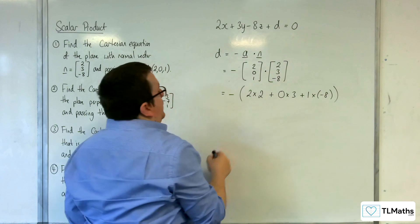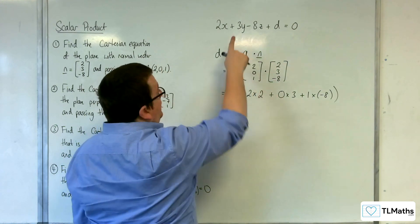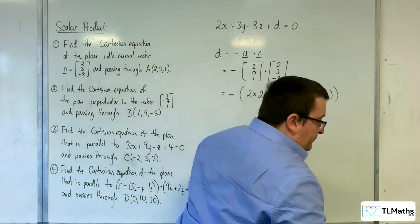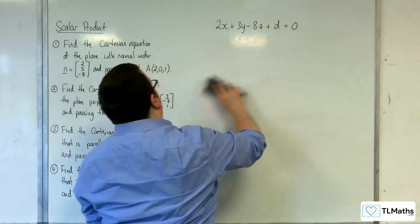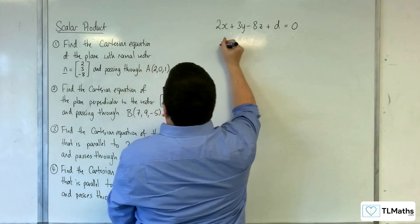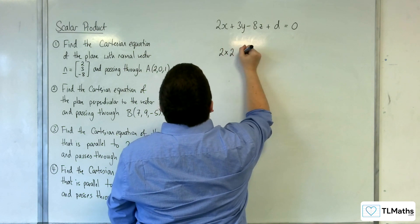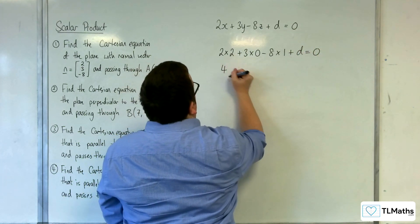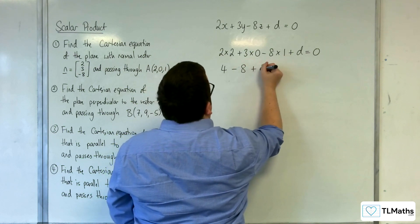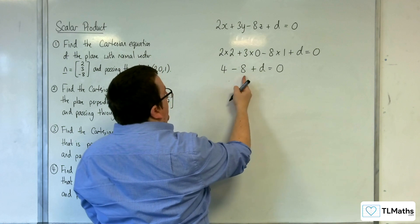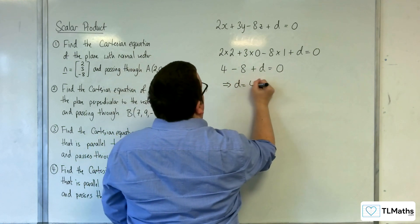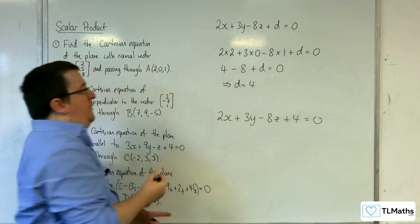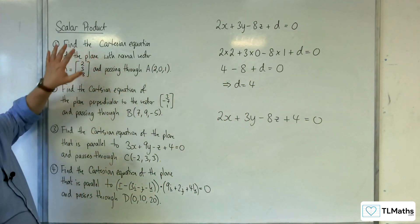So I've got to add on d and that equals 0, which is why this is negative. This is identical to substituting point A straight into the equation. So let's just substitute A in: 2×2 plus 3×0 take away 8×1 plus d equals 0. So 4 take away 8 plus d equals 0, giving minus 4 plus d equals 0, so d equals 4. Therefore 2x plus 3y minus 8z plus 4 equals 0 is the Cartesian equation for number 1.